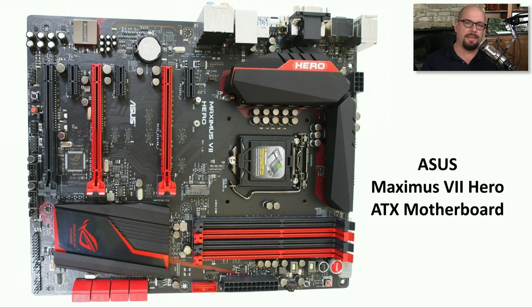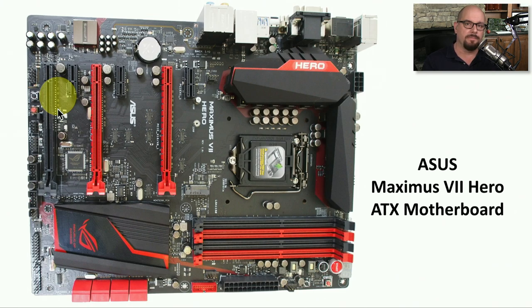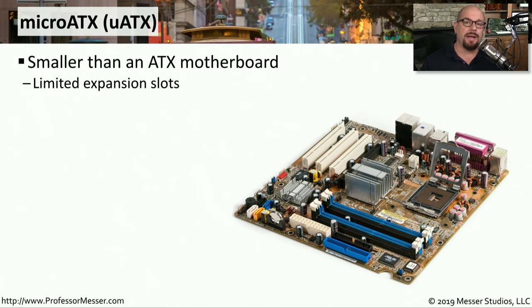Here's a closer look at this ATX motherboard. The power connector is here, and we have four memory slots. Notice there are six separate expansion slots available on this motherboard. That's one of the advantages of having this larger form factor — you're able to fit more components on a single motherboard. If you're installing a server, you might need the expansion available on a full-size ATX motherboard. But a computer on your desktop might not need that much expansion, and you may not want a larger system taking up space on your desk.